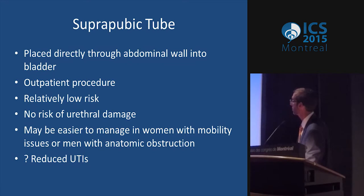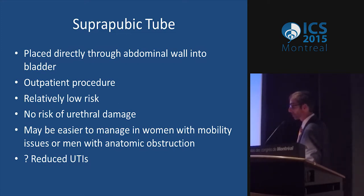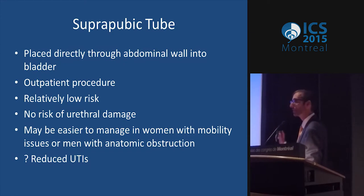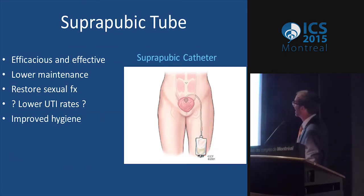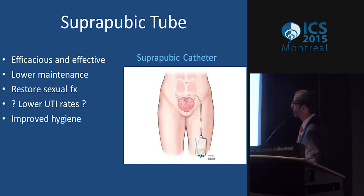When we do a suprapubic catheter, we put it directly through the abdominal wall into the bladder — a quick outpatient procedure done under a little sedation and a lot of local anesthetic, with relatively low risk and no risk of urethral damage. Particularly in women, it's efficacious and effective, probably easier to maintain, allows for easier sexual function, and can contribute to better hygiene in the perineal area.